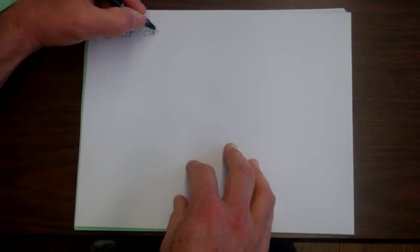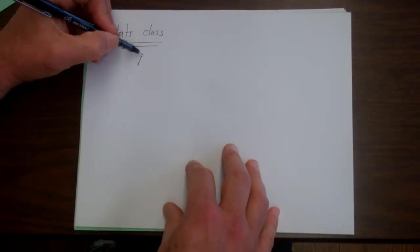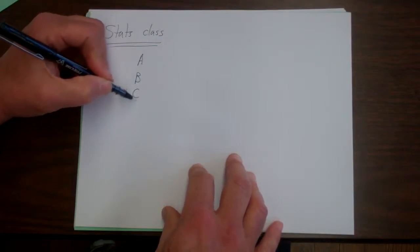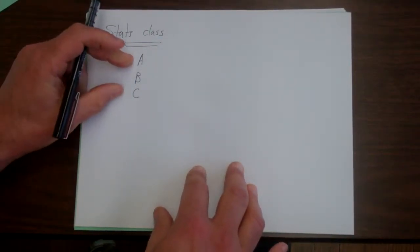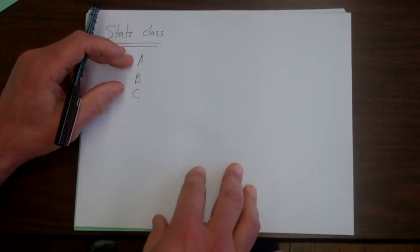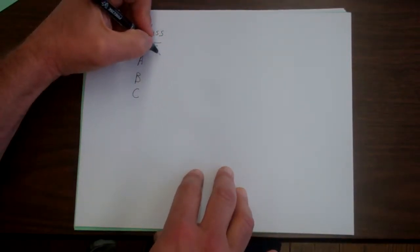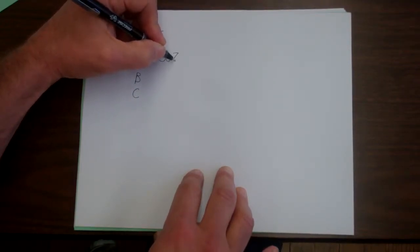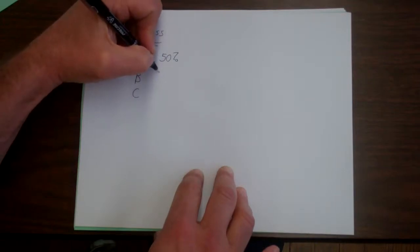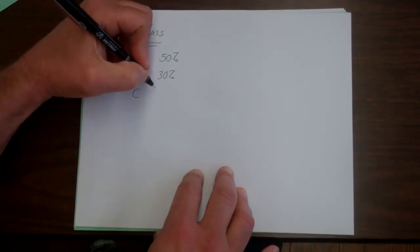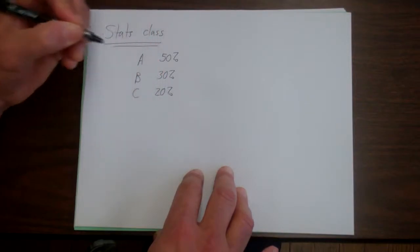So let's start off with the idea that you're taking a stats class and you're trying to predict your probability of getting a certain grade A, B, or C. Let's just say that you have three possibilities. You're either going to get an A or B or C. Let's say that you're pretty smart, you're not going to get a D or an F. And let's say here that 50% of the time you're going to get an A, 30% of the time you're going to get a B, and 20% of the time you're going to get a C.